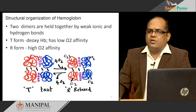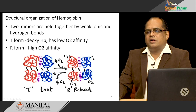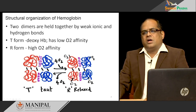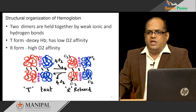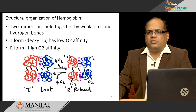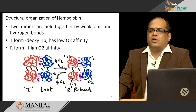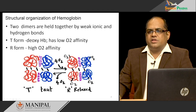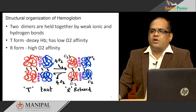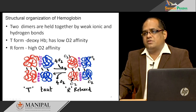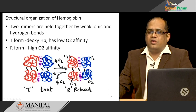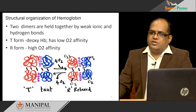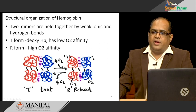Hemoglobin is present in two forms: the T or taut form and the R or relaxed form. In the T form, it is deoxyhemoglobin — oxygen is not attached because it has low oxygen affinity. Once an oxygen molecule binds to this T form, the weak hydrogen and ionic bonds — called salt bridges — are broken down. This causes a conformational change in hemoglobin, converting it to the relaxed R form, which has high affinity for oxygen. In a cooperative manner, the binding of the first oxygen is a little bit difficult, but further oxygen binding occurs more easily in the R form.